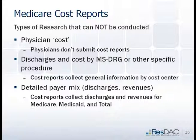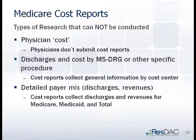Another important limitation: you cannot look up a specific DRG or procedure in the cost reports and find what it costs the facility to perform. CMS doesn't get into that level of detail. There are a series of cost centers — and while that sounds specific, it's similar to how pharmacy means anything in pharmacy with no further detail. So researchers must total up all costs to calculate a cost-to-charge ratio, then use claims with revenue center charge information to estimate the cost of those services.